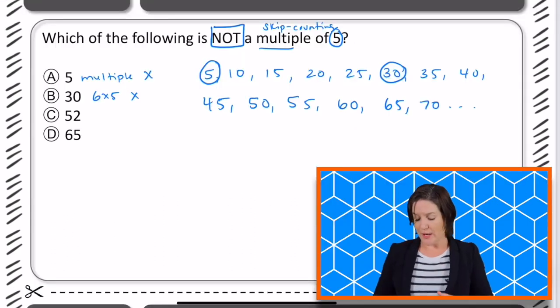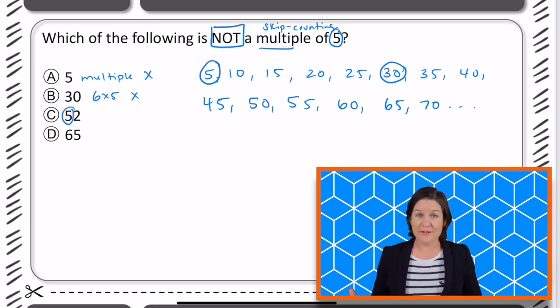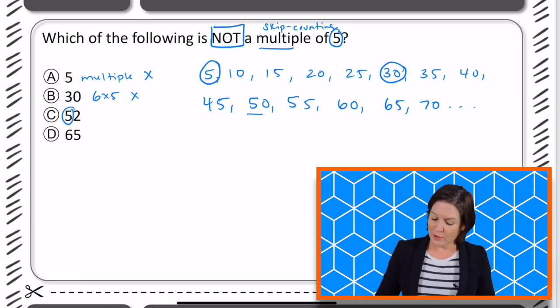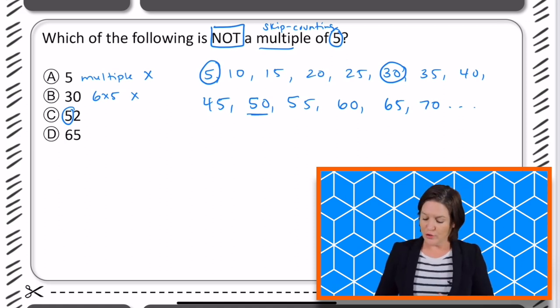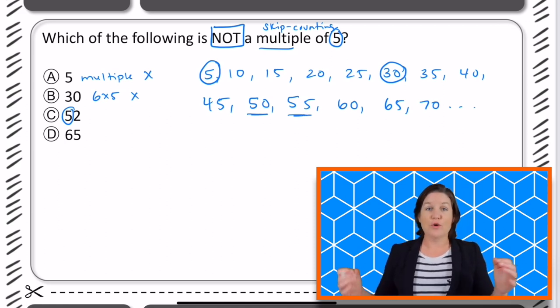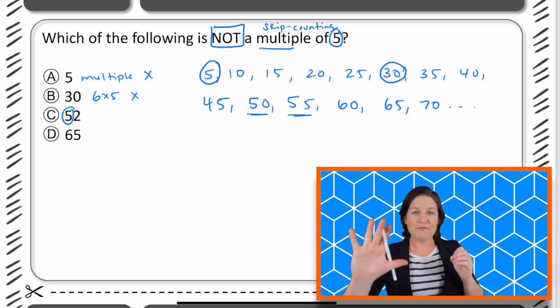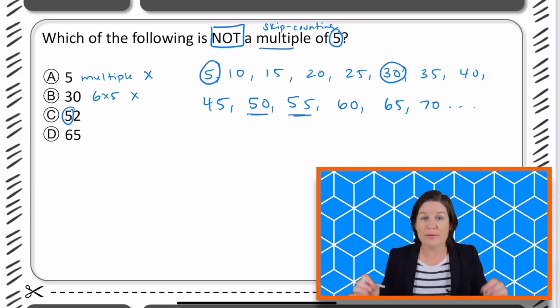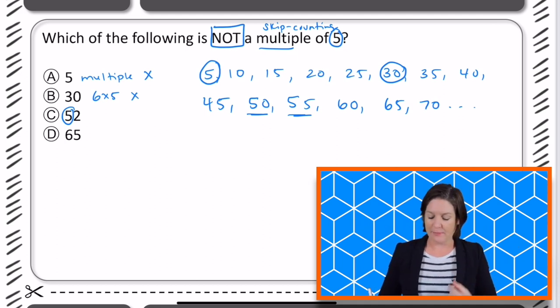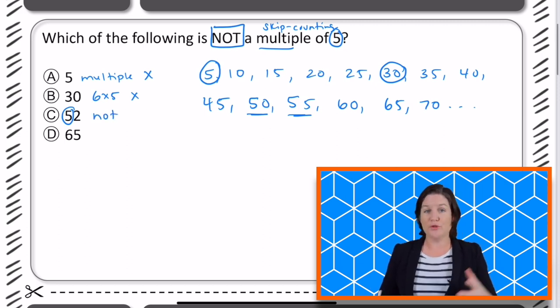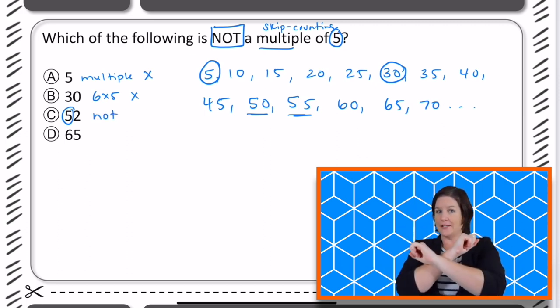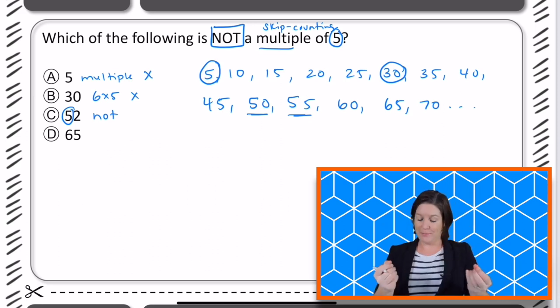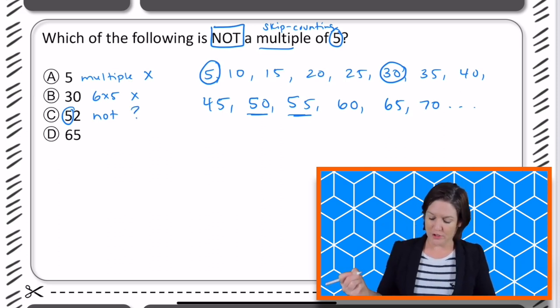What about 52? I see a five right here in the tens place. Is 52 a multiple of five? No, you can see right here we skip from 50 to 55. The cool thing about multiples of five is that there is always a zero or a five in the ones place. Zero or five in the ones place, that makes it a multiple of five. So this one is not a multiple, so should we keep it or eliminate? Let's keep it, right? I'm going to put a question mark right there.